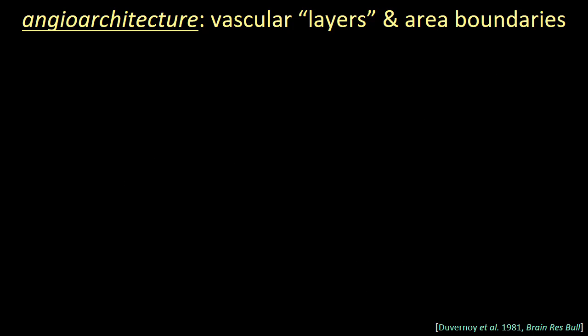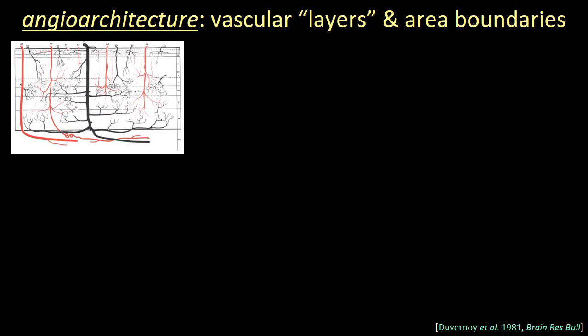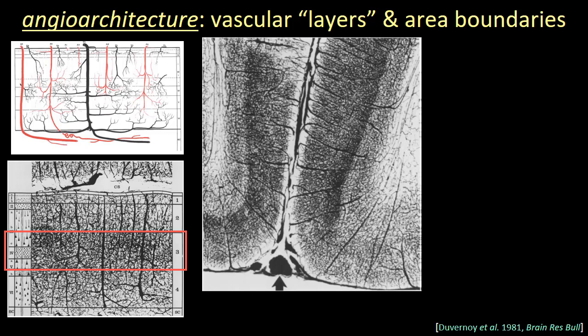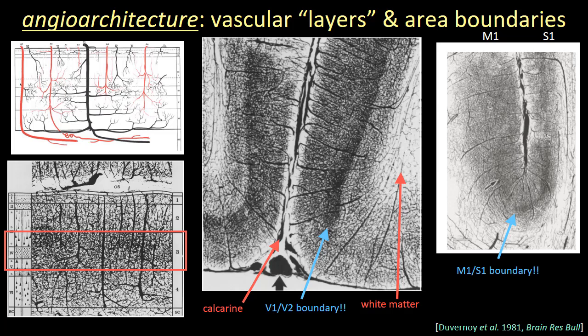Just like cytoarchitectonics and myeloarchitectonics vary a lot across areas, so do the angioarchitectonics. They vary a lot across layers and also across areas. In a seminal paper, Duvernoy defined six intracortical arterial types, five intracortical venule types, and four vascular layers. For example, vascular layer 3 is the site of the highest capillary density, overlapping with cortical layer 4 and a little of layers 3 and 5. Angioarchitectonics also vary across areas — the high capillary density in vascular layer 3 ends abruptly at the V1/V2 boundary, meaning vascular density can really vary a lot across the brain.